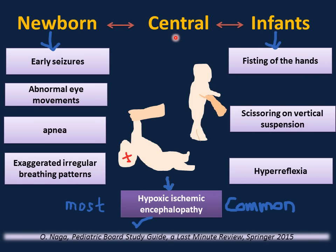Suggestive signs of central causes of hypotonia in newborns include early seizures, abnormal eye movements, apnea, and exaggerated irregular breathing patterns. In infants, fisting of the hands beyond the first few months of life is abnormal. Scissoring on a vertical suspension and hyperreflexia are also suggestive. The most common cause of central hypotonia is hypoxic ischemic encephalopathy.